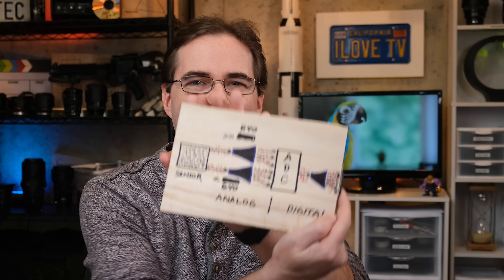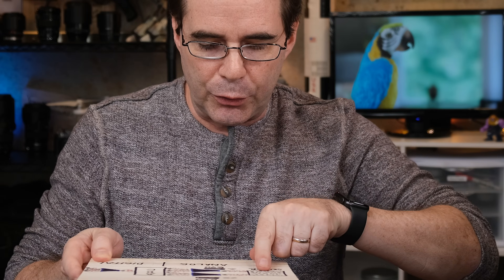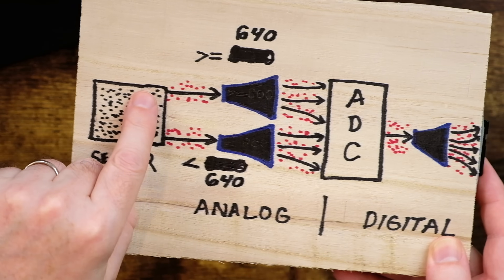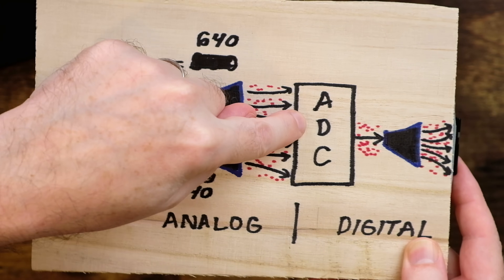So what is ISO invariance? I have a little explanation chart here that I drew up for you. This is your camera's sensor. The minute you take a photo, the signal travels from your sensor, and as it's traveling through your camera from your sensor to your analog-to-digital converter, it is picking up noise — there's noise in the camera, noise in the circuitry, photon noise — collecting all this noise as it travels.